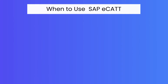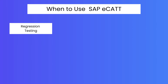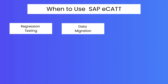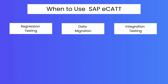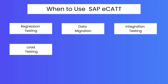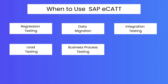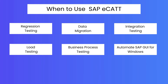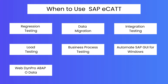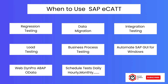When to use SAP eCATT: You can use SAP eCATT when you want to do regression testing, data migration, integration testing, load testing, business process testing, automate SAP GUI for Windows testing, Web Dynpro for ABAP testing.